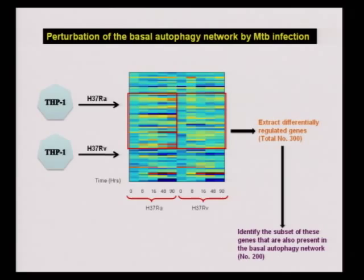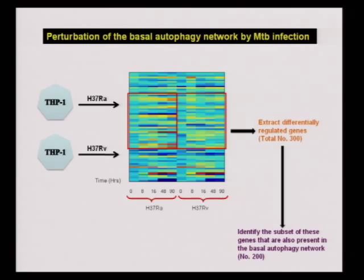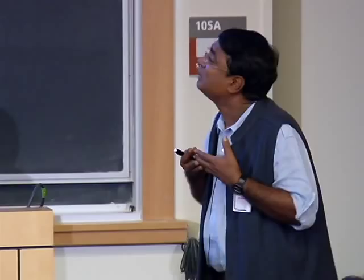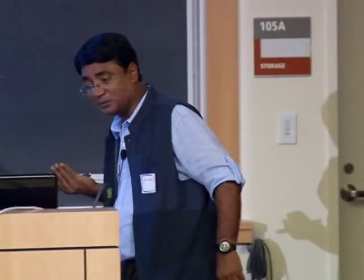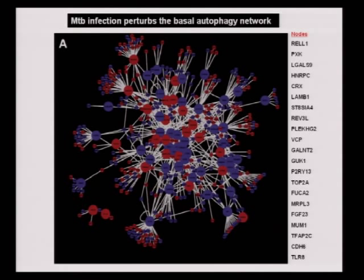We took infected cells — with RA or RV — at different time points and performed microarray analysis of all host genes induced at various times post-infection. By comparing profiles we extracted genes differentially regulated in RV-infected cells versus RA-infected cells, filtering for gene expression events relevant to virulence properties. We got about 300 genes in this category, and surprisingly, 200 of these were components of the basal autophagic network.